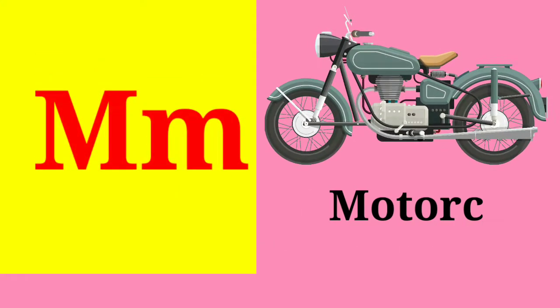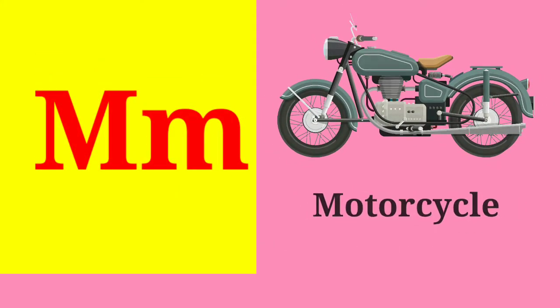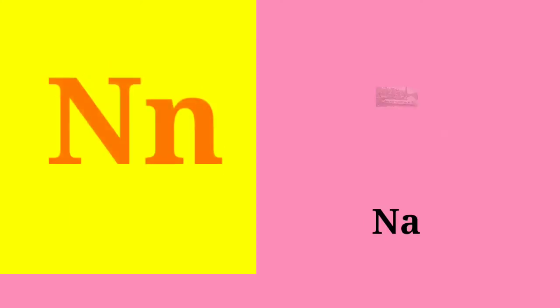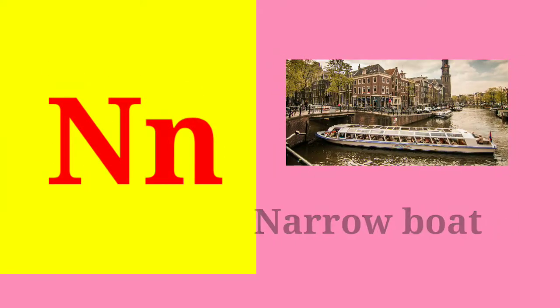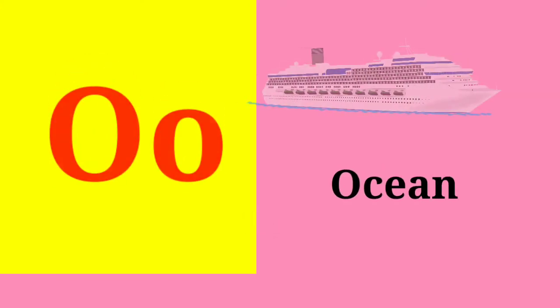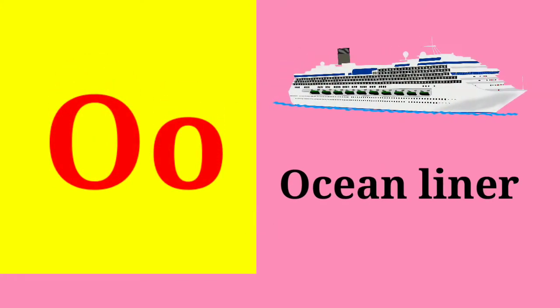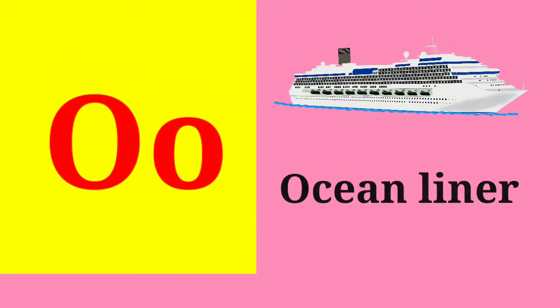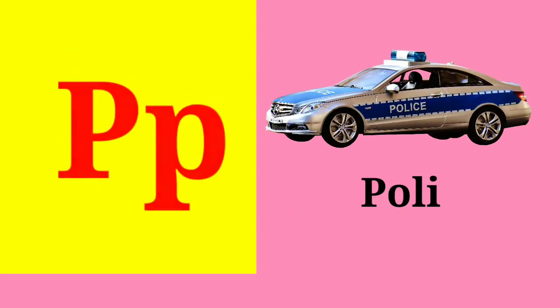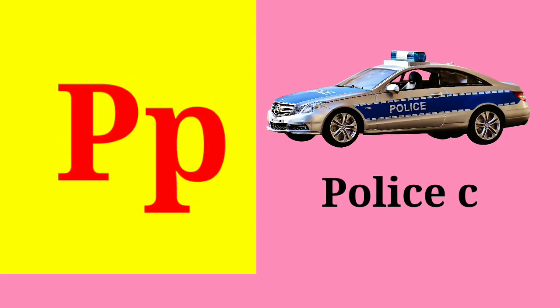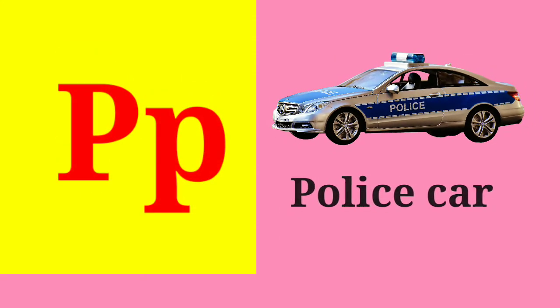M. M is for motorcycle. N. N is for narrowboat. O. O is for ocean liner. P. P is for police car.